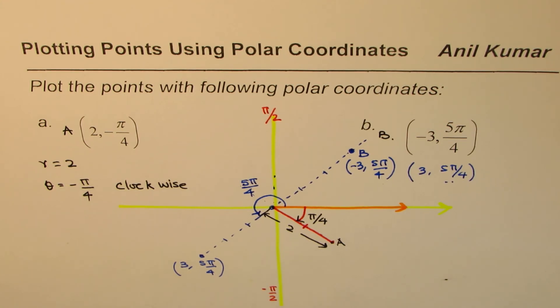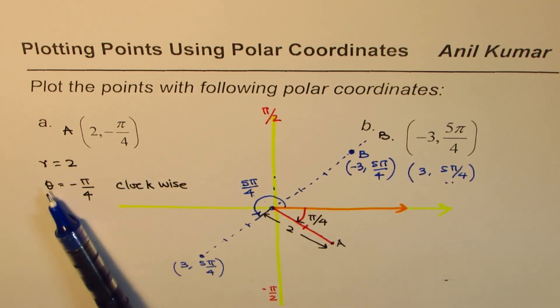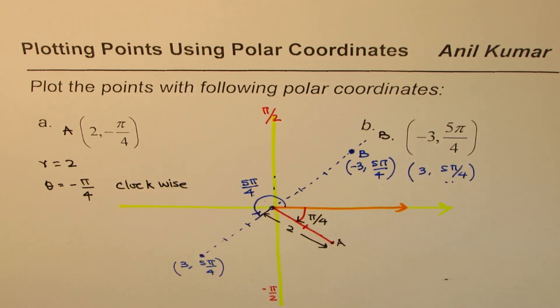So I hope that is clear. That is how you represent a coordinate point in a polar system where R value is negative. I'm Anil Kumar and I hope this concept helps you to understand how to represent negative theta value and negative R, the distance from pole. Thank you and all the best.